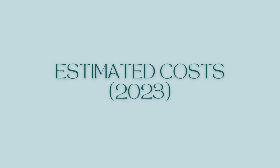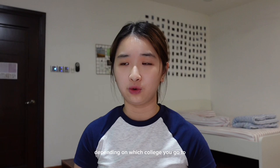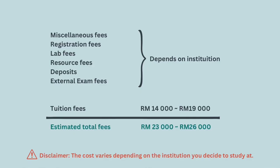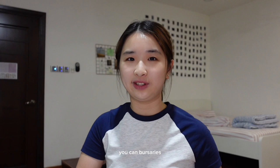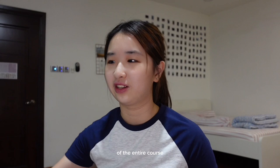Next we'll talk about estimated cost and fees. The fees vary depending on which college you go to. Tuition fees for AUSMAT usually range from RM14k to RM19k, but miscellaneous fees, registration fees, lab fees, resource fees, deposits and external exam fees depend on the institution. A rough estimate for the total fees would be about RM23k to RM26k. Note that science students pay more due to lab fees. Do apply for scholarships — colleges like MCKL and Sunway offer a lot of scholarships that can greatly reduce the total cost.